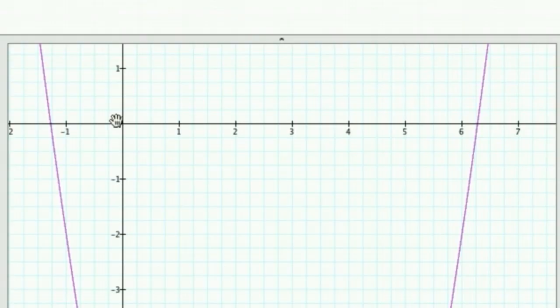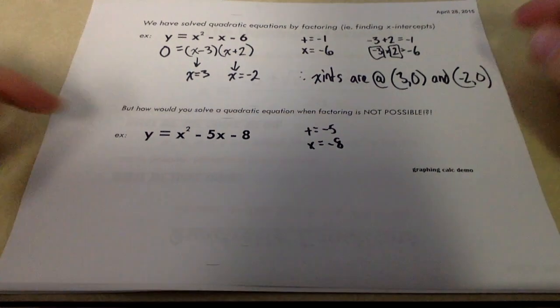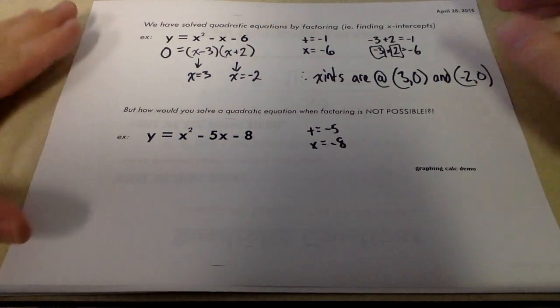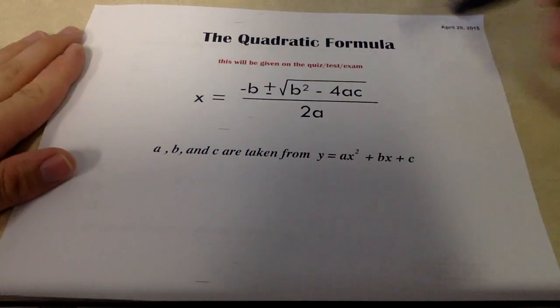You can see we definitely are crossing the x-axis. We cross twice at negative 1.27-ish and 6.27-ish. From that demo, we can tell that this guy does in fact have two x-intercepts. But we can't find them by factoring. We're going to look at something new today. And that's what we call the quadratic formula.